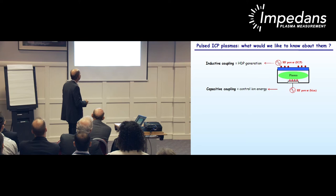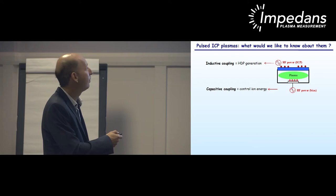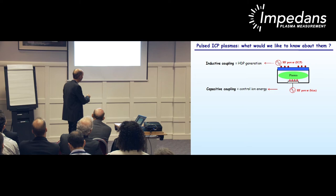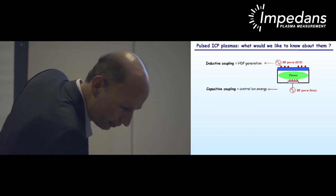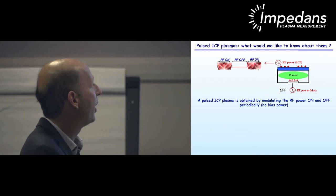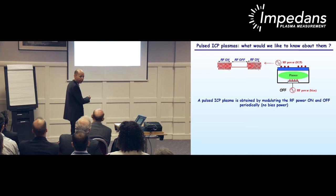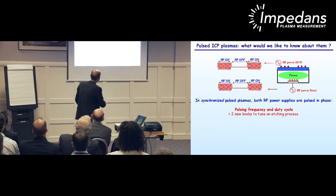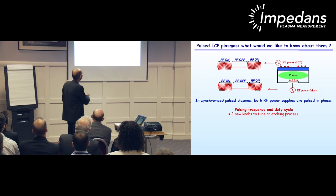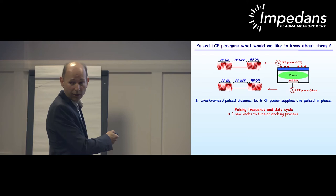What is a pulsed ICP plasma and what would we like to know about them? In a typical HDP etching reactor, we have two RF power supplies. The first is inductively coupled to the plasma and is used to generate a high-density plasma in the chamber. The second, known as bias power, is capacitively coupled to the electrode and is used to control the ion energy bombarding the wafer. A pulsed ICP plasma is simply obtained by modulating the ICP power on and off periodically. Regarding the second power supply, we have two possibilities: if our goal is to minimize ion energy on the wafer, it is simply switched off.